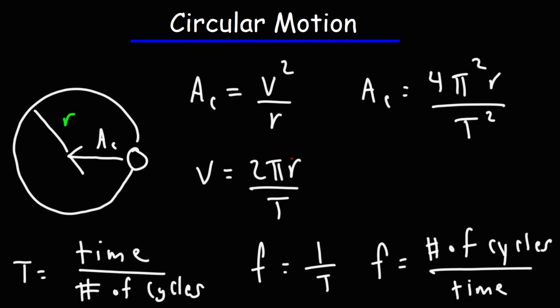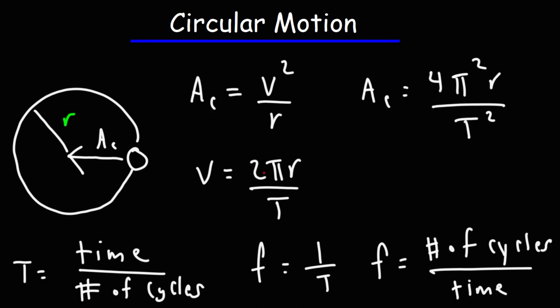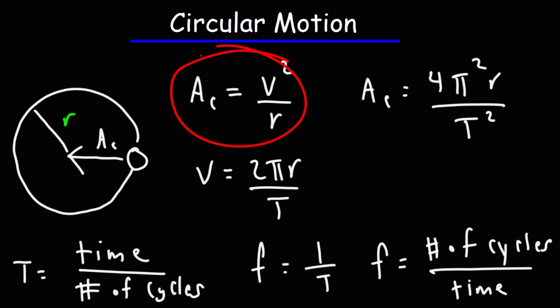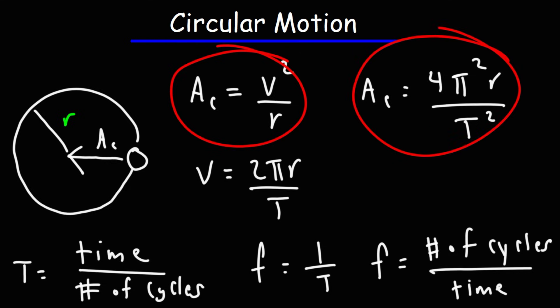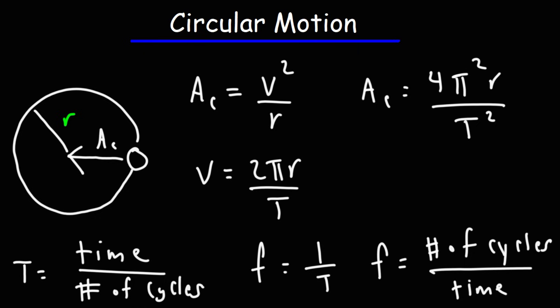If you substitute the speed formula into the centripetal acceleration equation, you'll end up getting a new equation on the right. So you can calculate the speed at which an object orbits a circle, and you can calculate the centripetal acceleration if you know the speed and the radius. If you know the period, you can use that formula to calculate the centripetal acceleration.